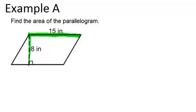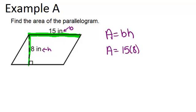So the area of a parallelogram is base times height. And in this case, 15 inches is our base, and 8 inches is our height. So all we have to do is multiply 15 times 8 to get 120, and then for our units, we're going to need inches squared.